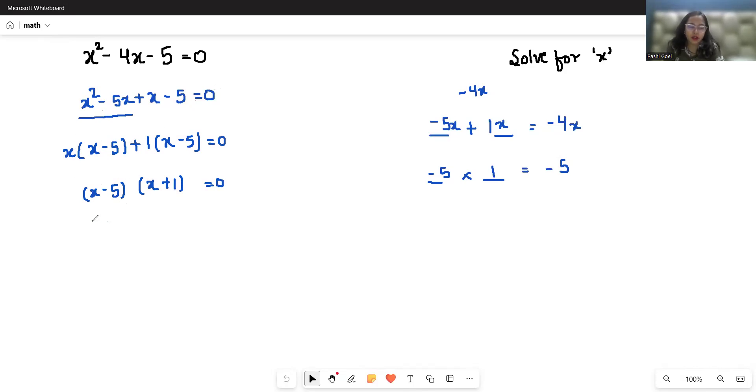Now we have two factors. To find out the solution, we have to put the factors equal to 0. So first, x - 5 = 0, x = 5. And if x + 1 = 0, x = -1. So two values of x are 5 and -1.